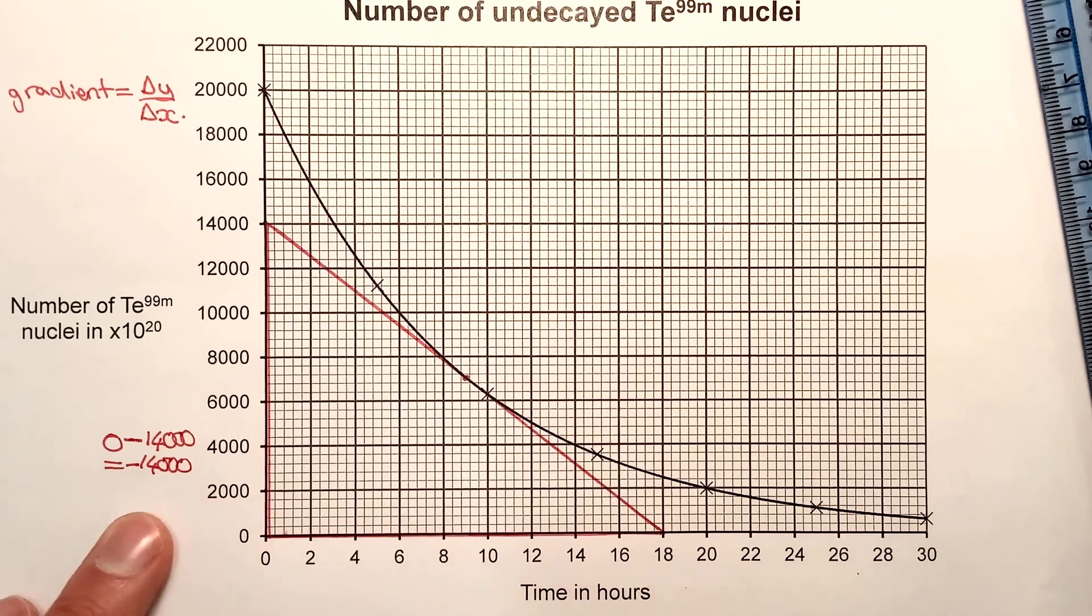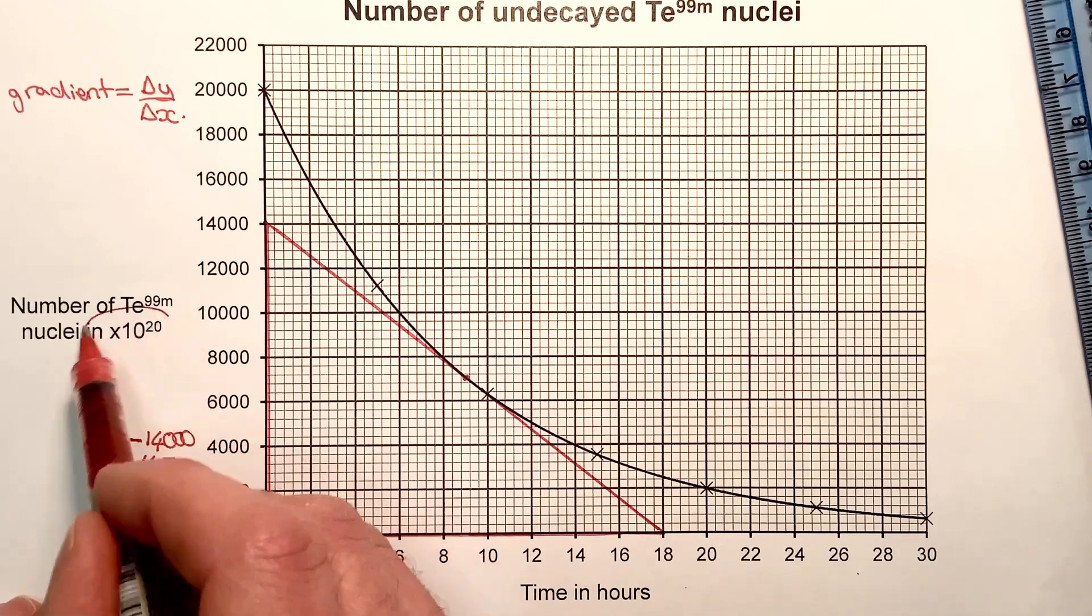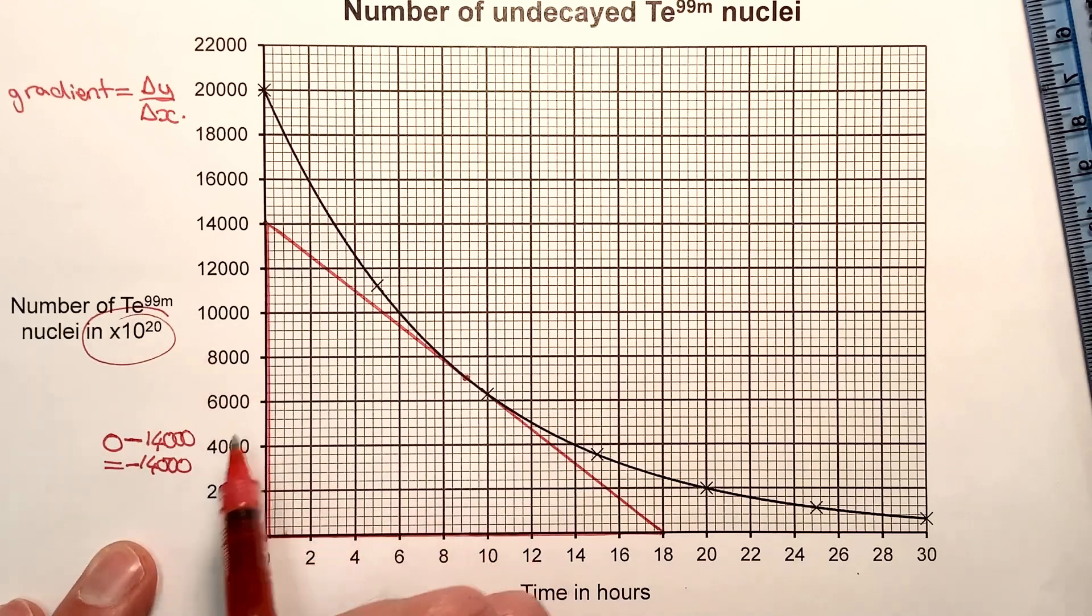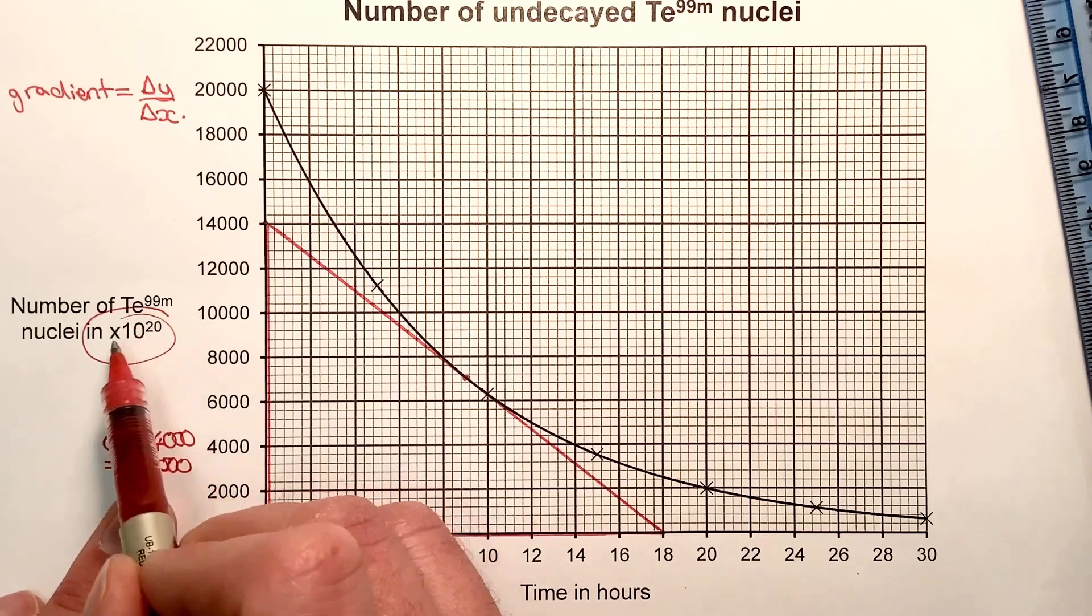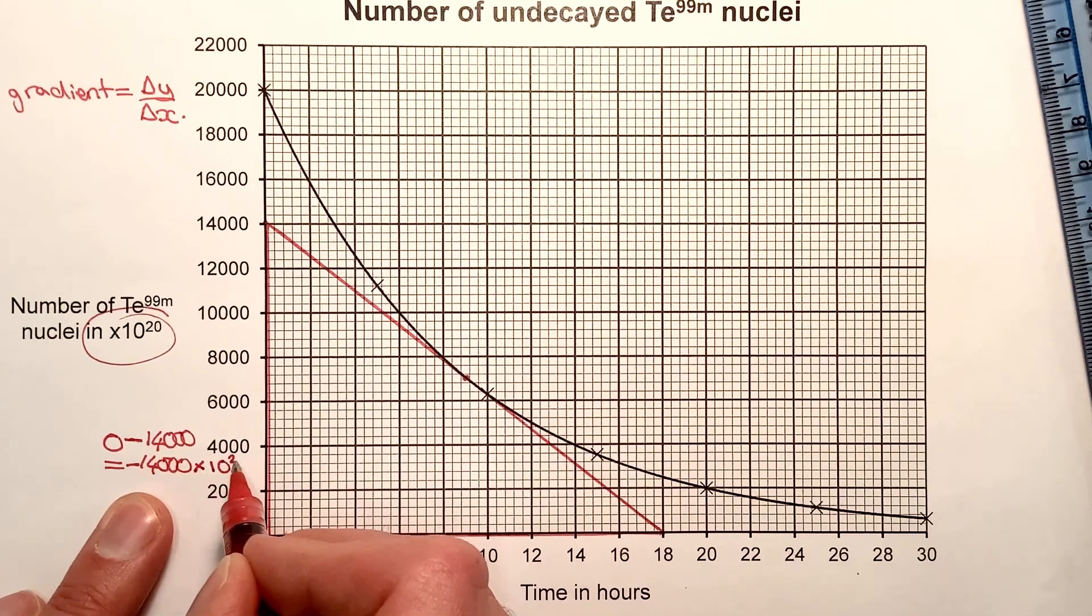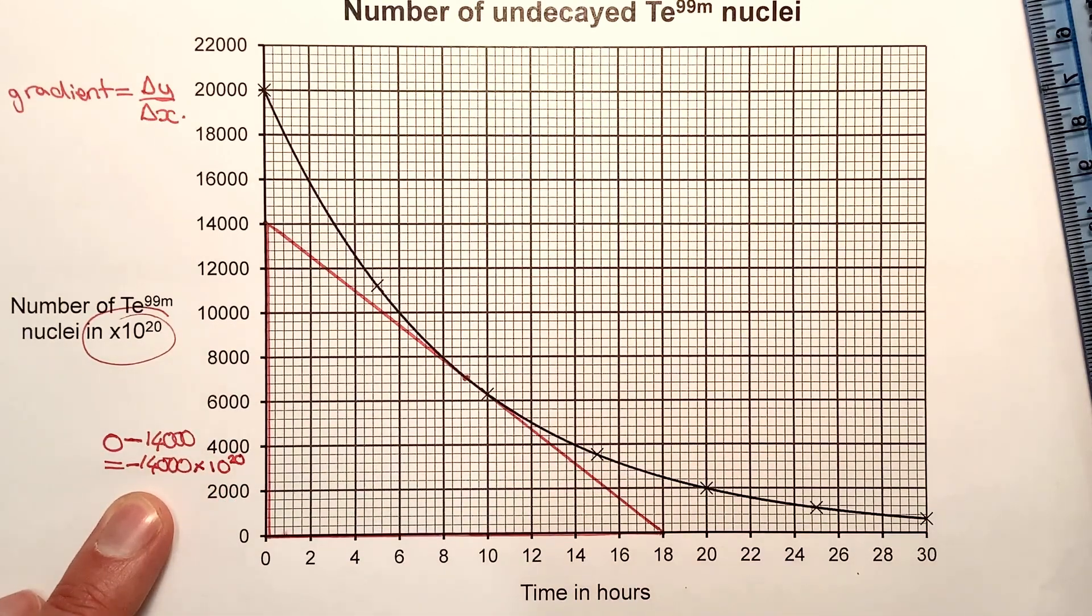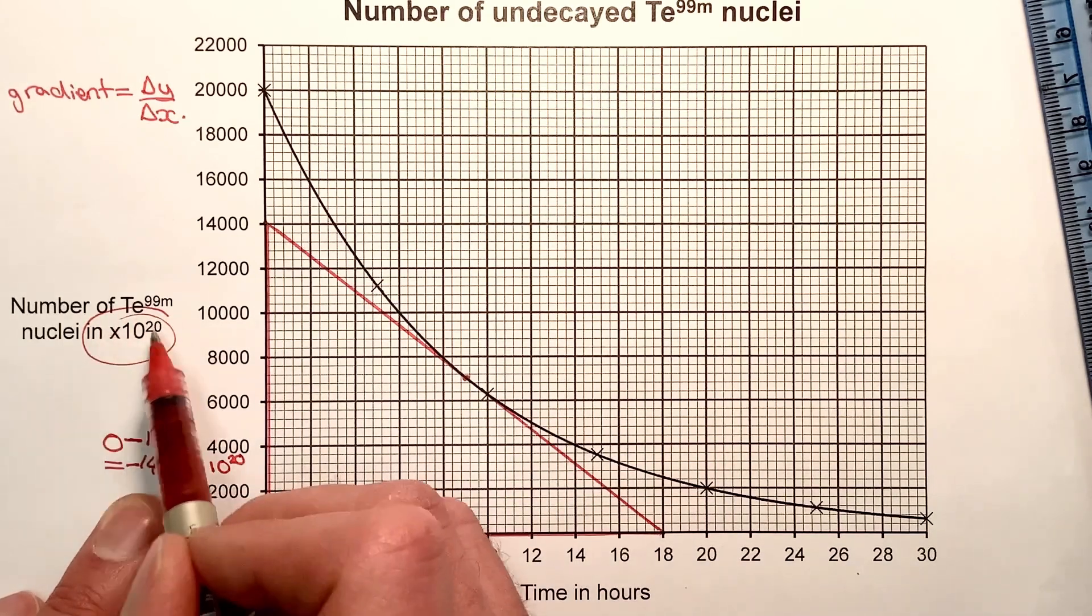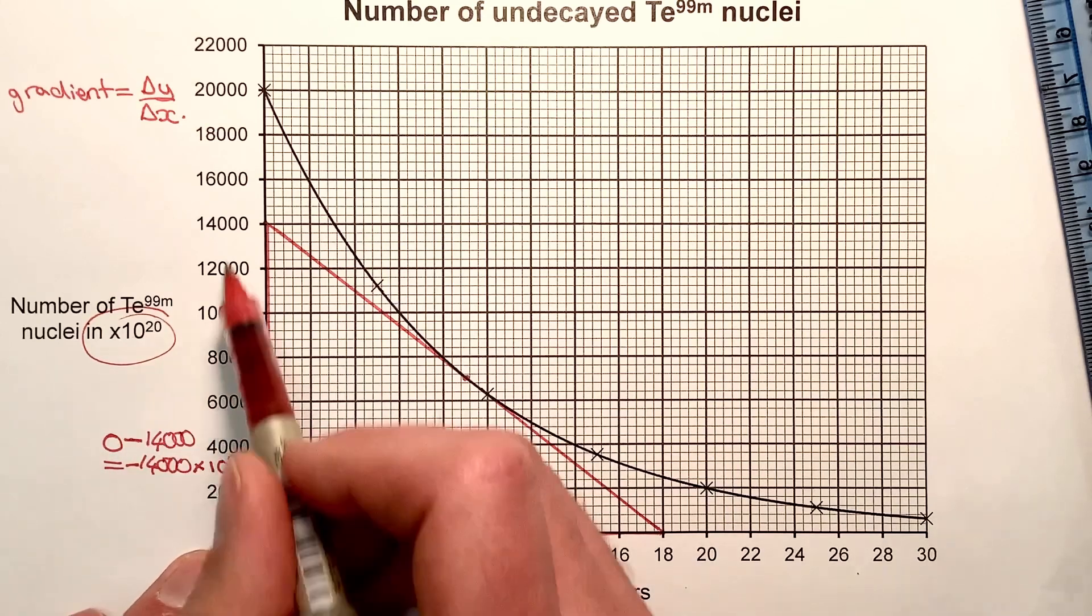I didn't look here, which says that this axis is showing 14,000 times 10 to the 20. So I should have times 10 to the 20 there. Watch out for things that are included on the axes rather than on the number here.